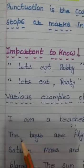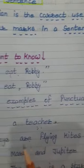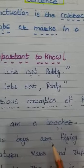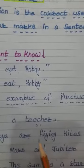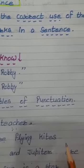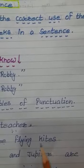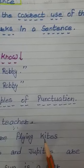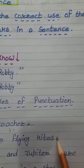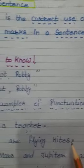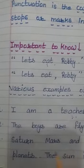Next is: 'The boys are flying kites.' Again the same question arises — whether any additional information is left or the sentence is completed here. So we will clear this confusion by adding a full stop at the end of the sentence.